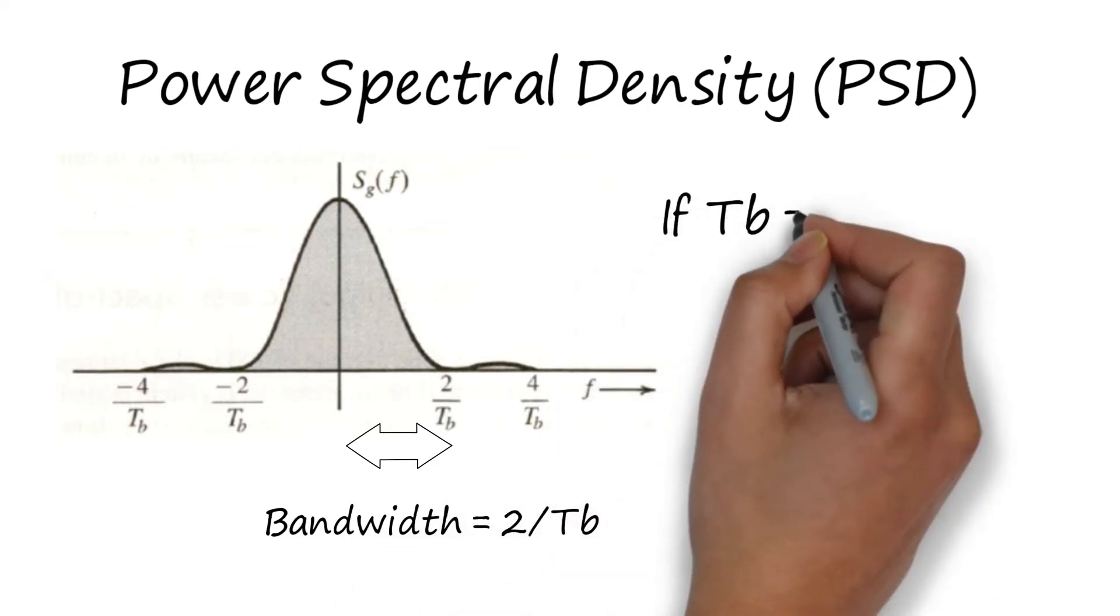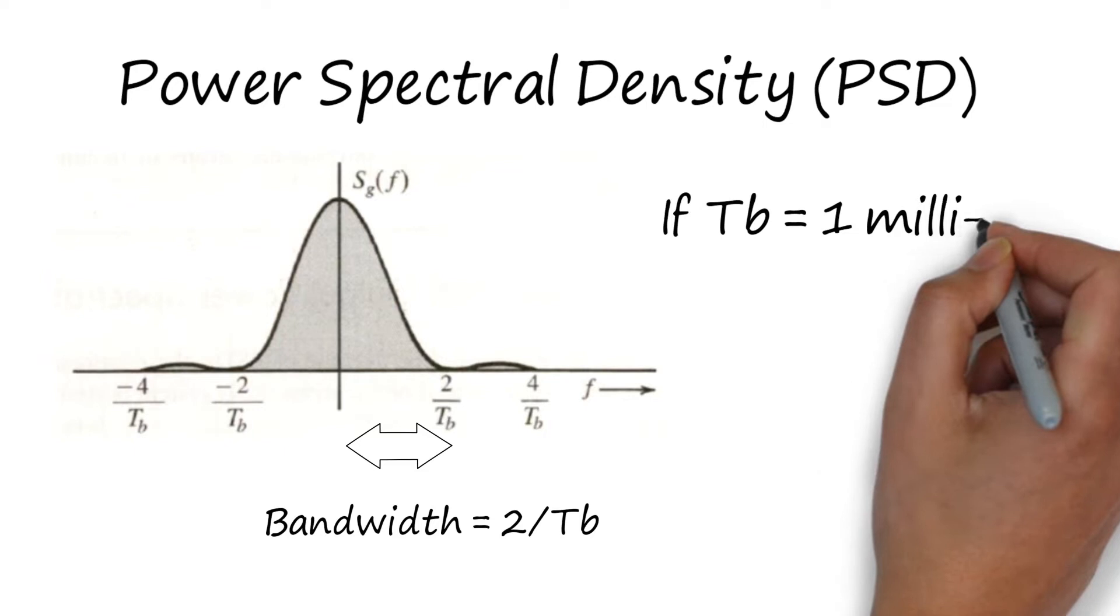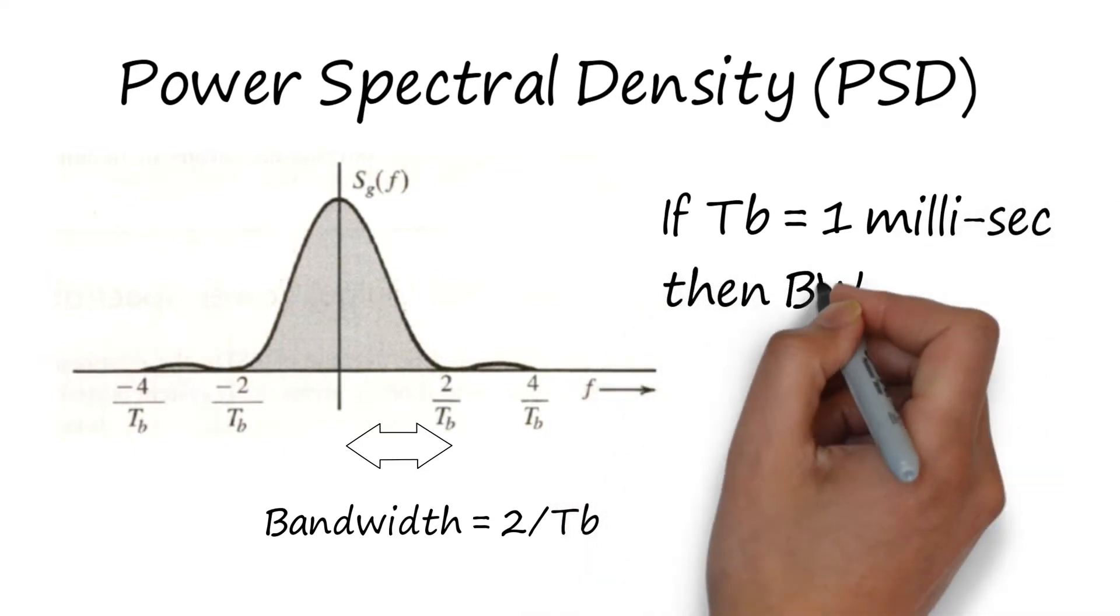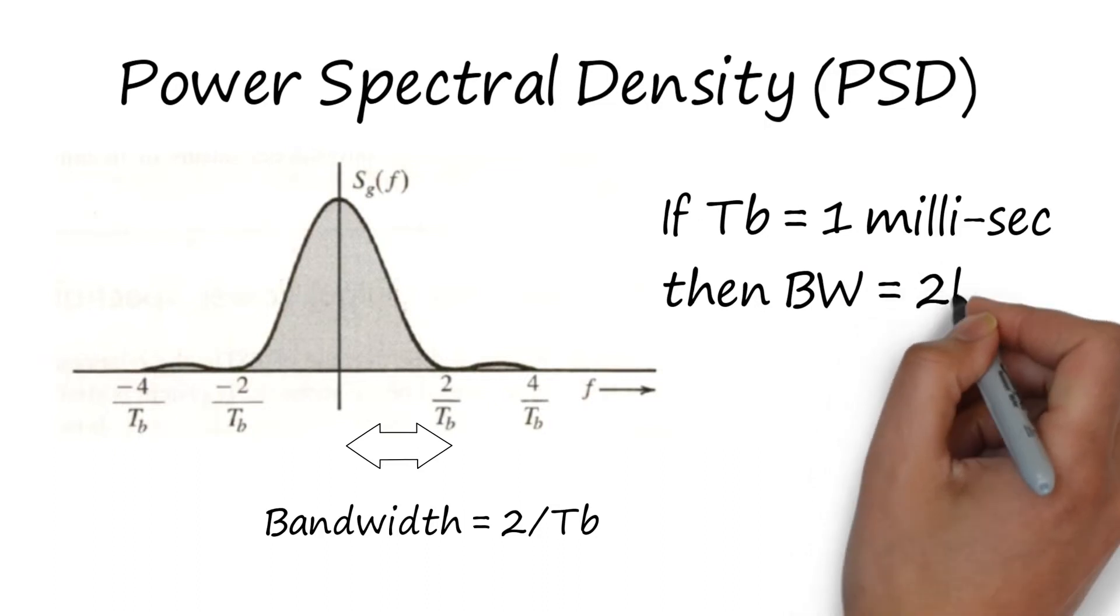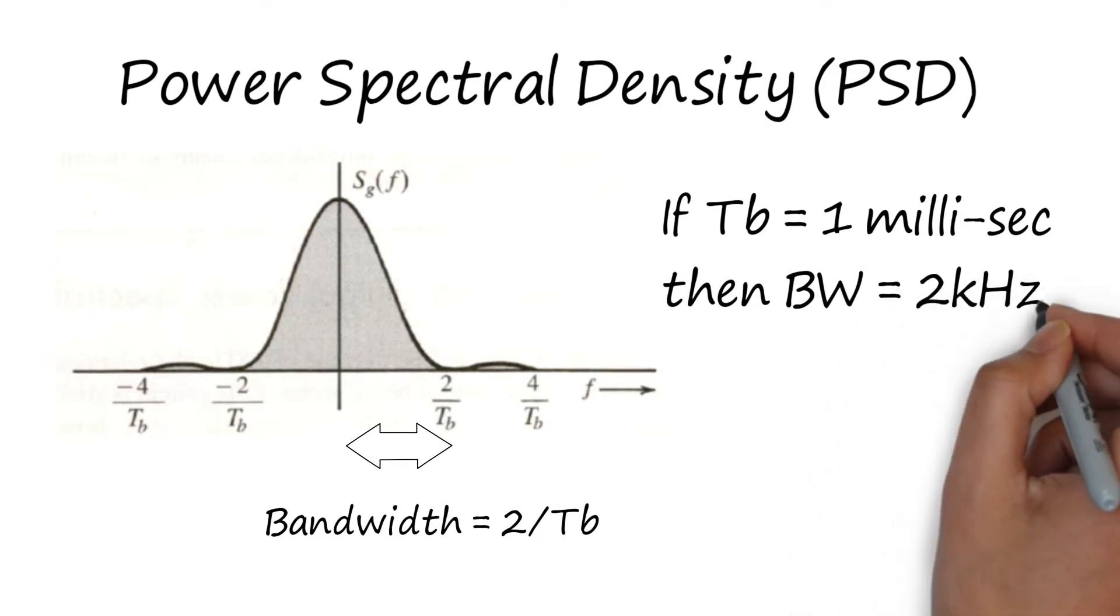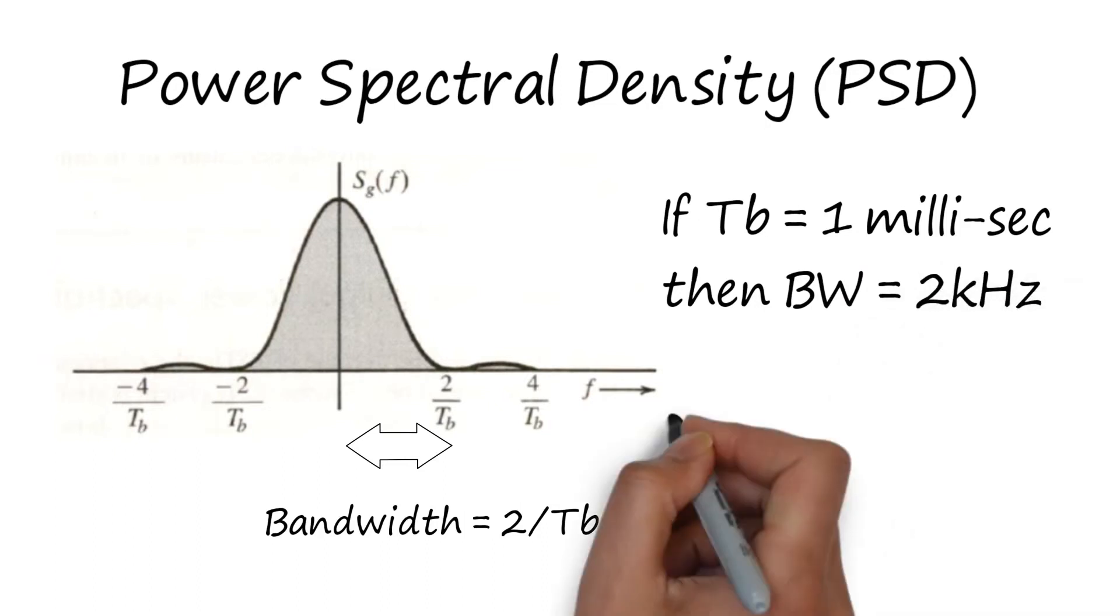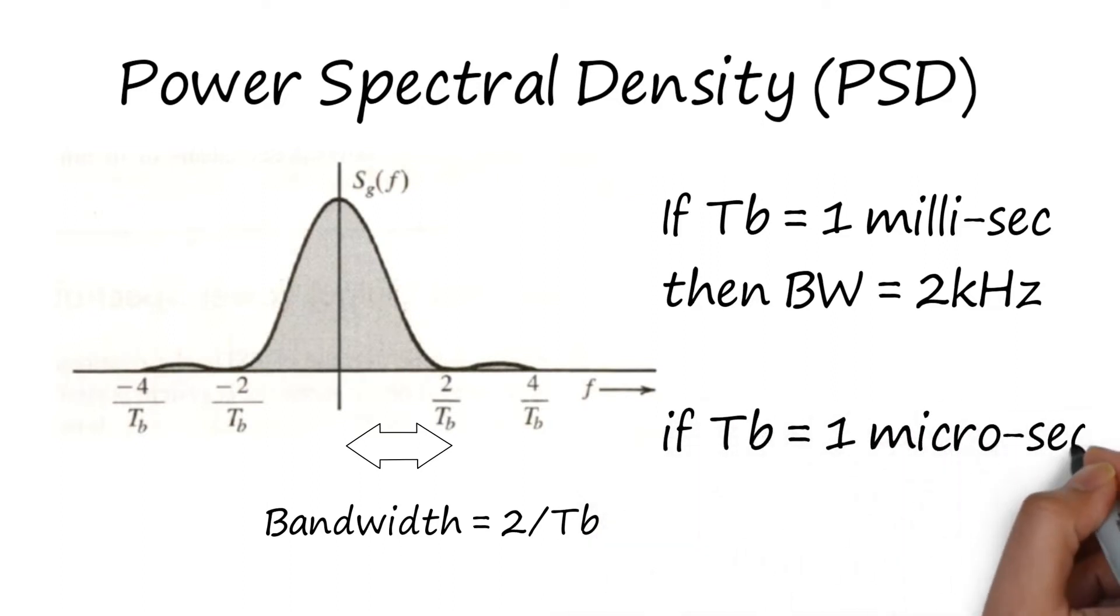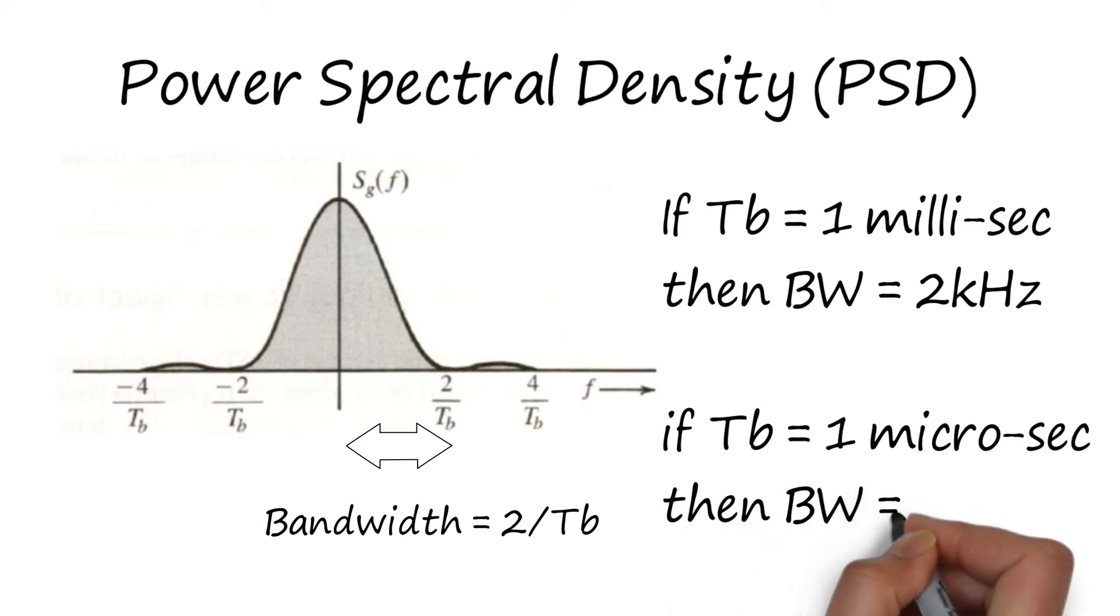Now in this PSD plot, by first assigning TB equal to 2 milliseconds, the main lobe bandwidth, that is 2/TB, is simply 2 kilohertz. And if we set TB to microseconds, the bandwidth would increase to 2 megahertz.